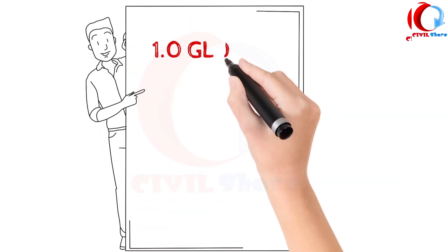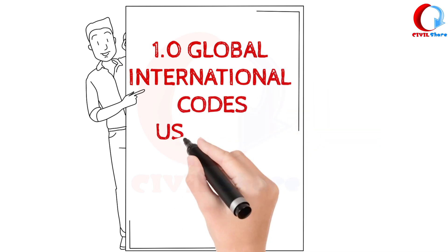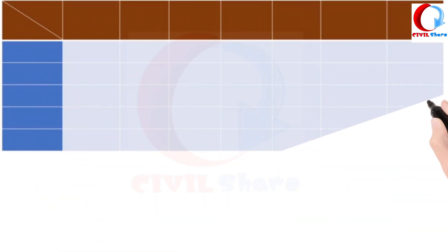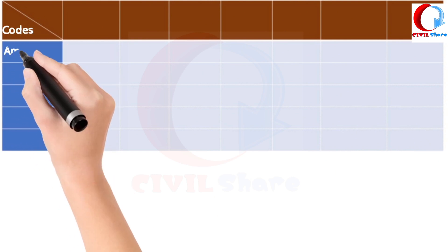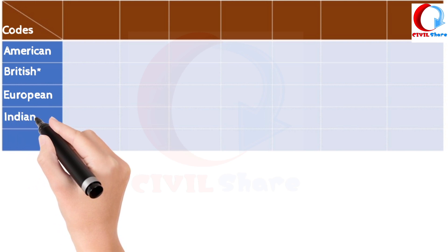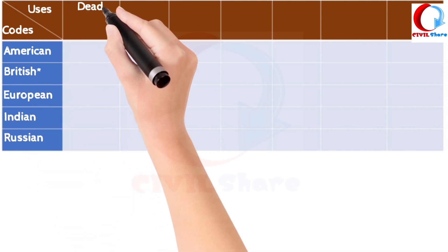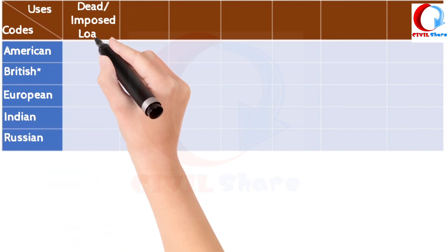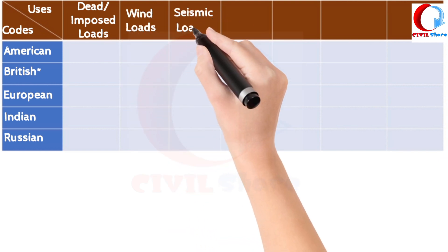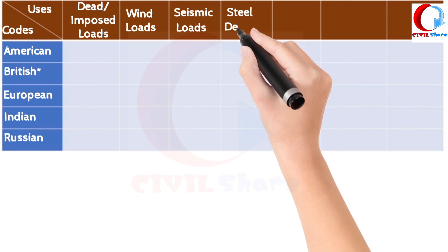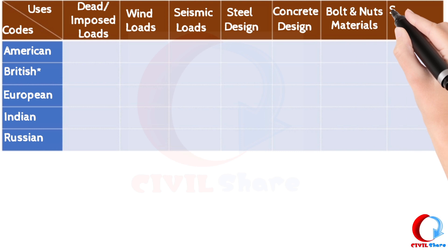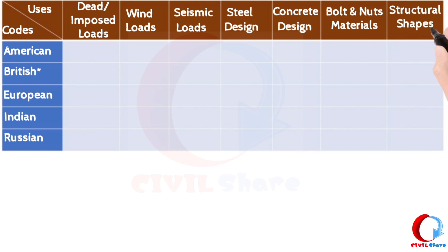Let's start with the first one — Global International Codes used for Pipe Rack Design. The codes are categorized as American, British, European, and Indian, and they cover uses such as Dead or Imposed Loads, Wind Loads, Seismic Loads, Steel Design, Concrete Design, Bolts and Nuts, Materials, and Structural Shapes.